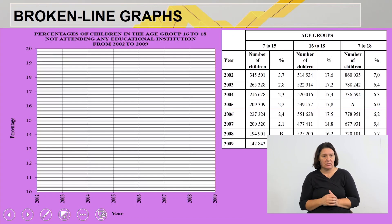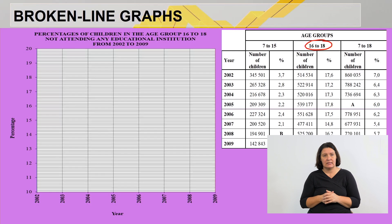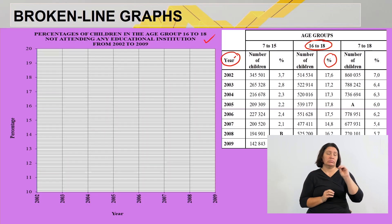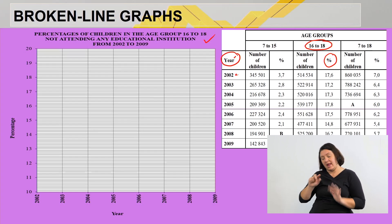Here is our next slide. We have to look at age group 16 to 18. For the sake of time, I indicated the heading already and labeled the two axes. Remember we work with ordered number pairs. In this case, our ordered number pairs will be the years and the percentages. Let's plot them. In the year 2002, 17.6 percent of children between 16 and 18 did not attend any formal schooling.